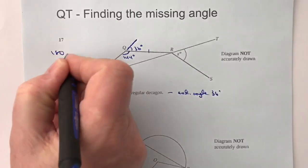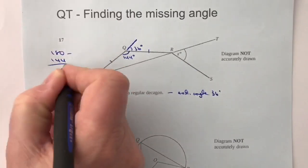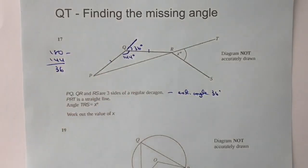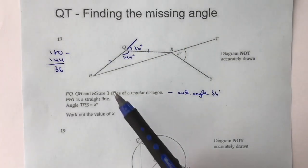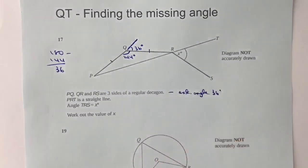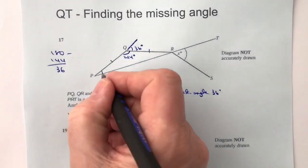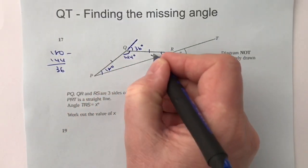So if I work out 180 minus 144, I get left with 36 degrees, which is the total of these two angles added together. Now because they're both going to be the same, it means that each angle must be 18 degrees.